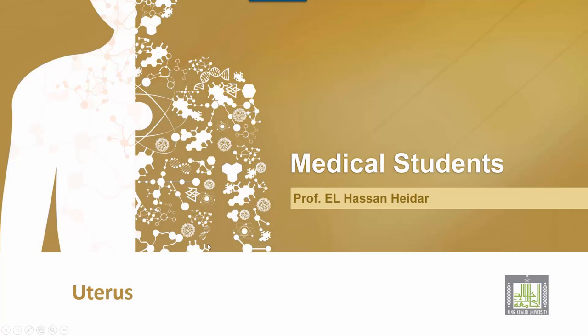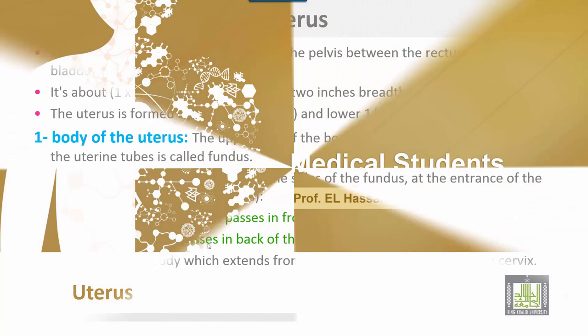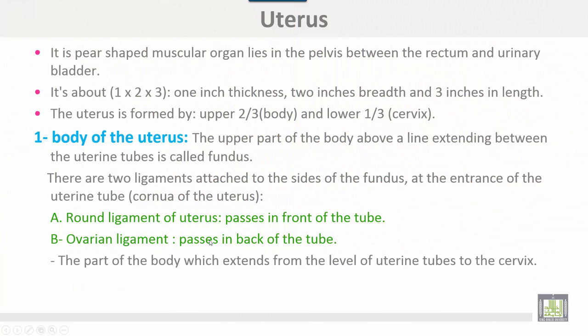The uterus is a muscular organ, pear-shaped, lies in the pelvis between the rectum and urinary bladder. It is about one inch in thickness, two inches breadth, and three inches in length. The uterus is formed by the upper two-thirds forming the body, and the lower third forming the cervix.